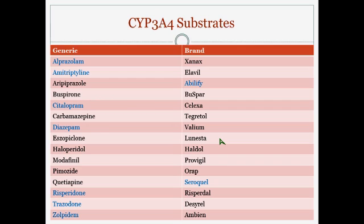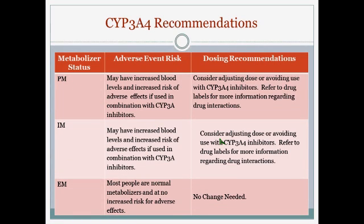For CYP3A4 substrates, these are medications metabolized by 3A4. These are non-pro drugs, so they are being taken from their active form and metabolized to an inactive form. Several of these are on the top 200. For poor metabolizers, there may be increased blood levels and increased risk of adverse effects when used with a CYP3A4 inhibitor. The physician might want to consider adjusting the dose or avoiding use with the 3A4 inhibitor, referring to drug labels for more specific guidance, as some labels say not recommended, some say do not use, and some combinations have been shown safe.